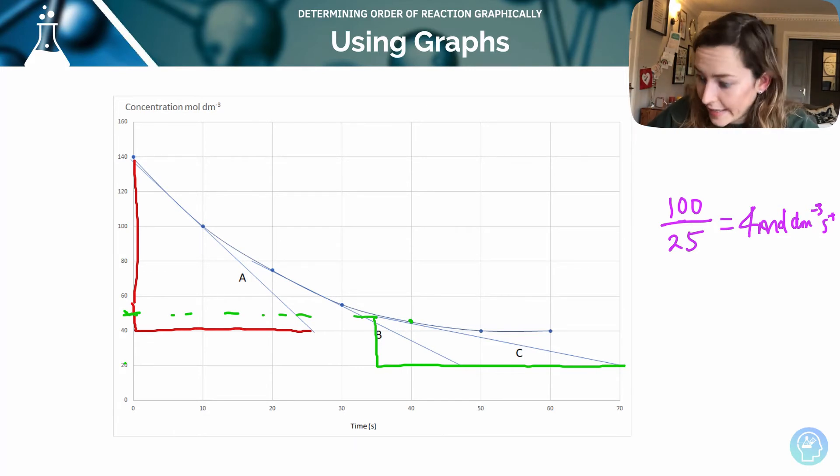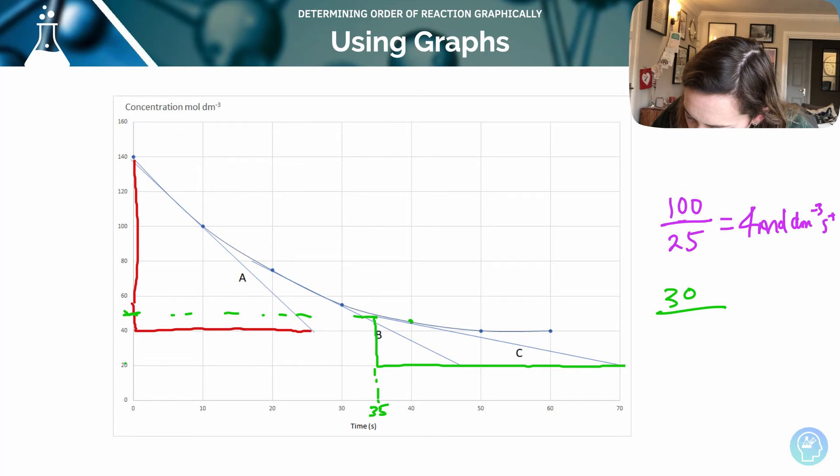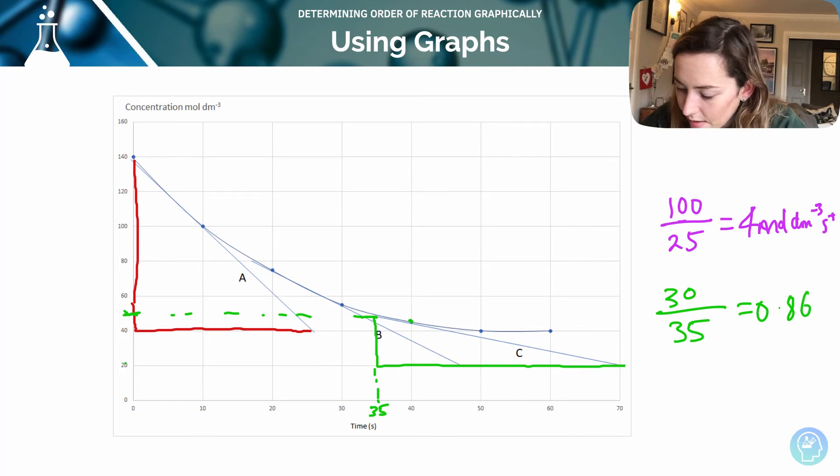I have gone from 20 up to about, I might extrapolate backwards here just so I can see properly, 50. I'm doing this roughly, of course. In the exam, you'd be really careful with your ruler. So 20 to 50, that's a rise of 30. And a run, over what time period is that happening? Well, 35 all the way over to 70, so 35. So 30 divided by 35. That's a significant change in rate. It's a significantly slower rate. 0.86 moles per decimeter cubed per second.